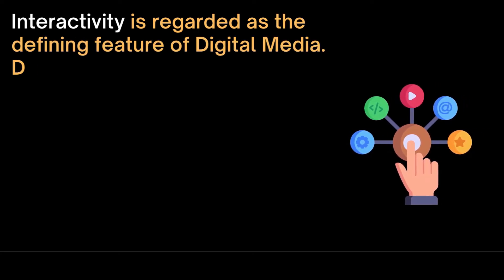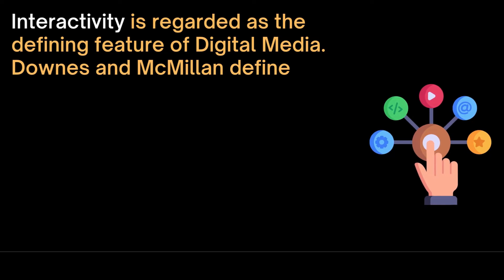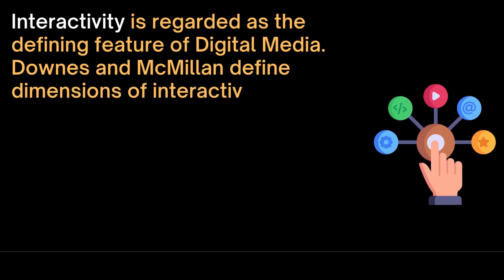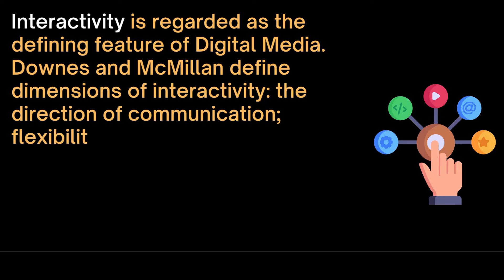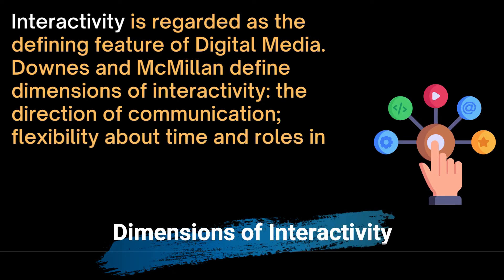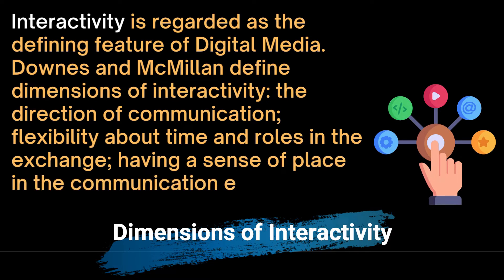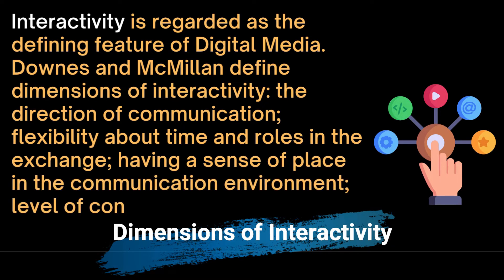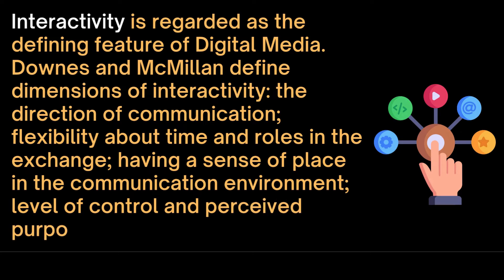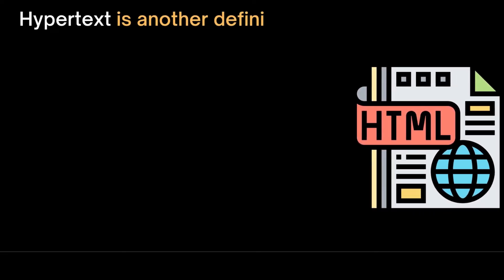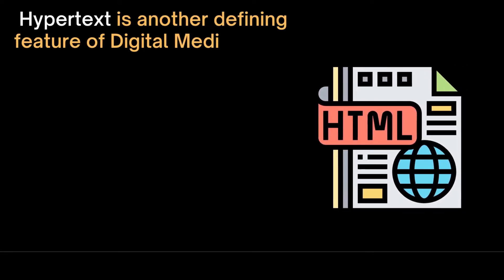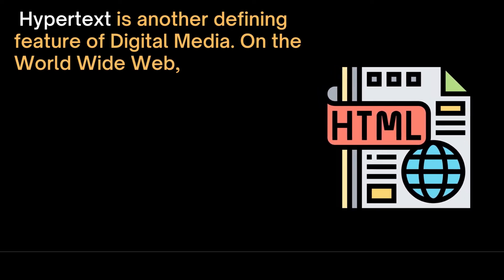Interactivity is regarded as the defining feature of digital media. Downs and McMillan define different dimensions of interactivity, which include the direction of communication, flexibility about time and roles in the exchange, having a sense of place in the communication environment, level of control in the communication process, and perceived purpose of interactivity.